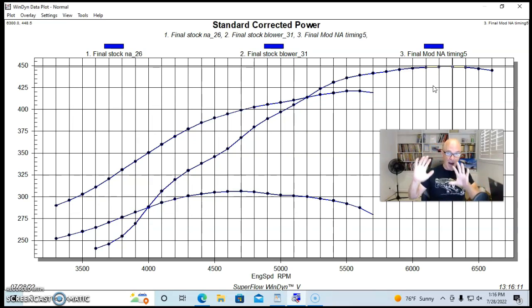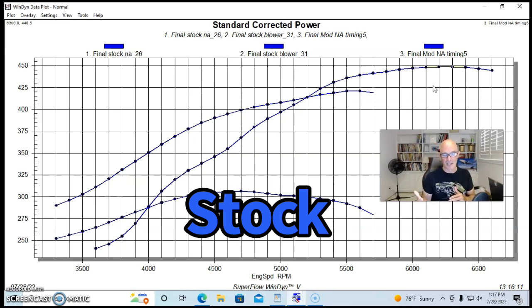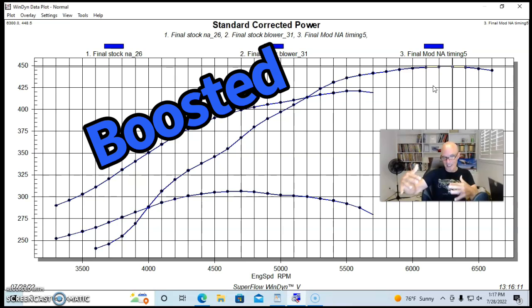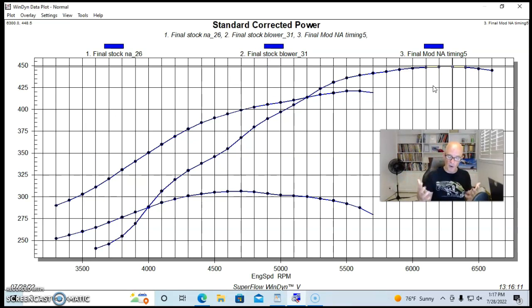Our modified NA combination was now making more than our supercharged combination when it had the stock components. Below 5000 or 5200 RPM, the supercharged combination with stock heads, cam, and GT40 intake made more power and torque than our modified NA combination. But this begs the question - we've run our 347 with stock heads, cam, intake, and with a supercharger. We've run it with modifications in NA form making good power.